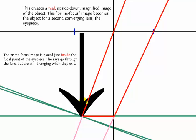But what we are going to do is notice that those red rays are diverging, because the object is just inside the focal point of the eyepiece. In other words, we're using this as a magnifying glass.